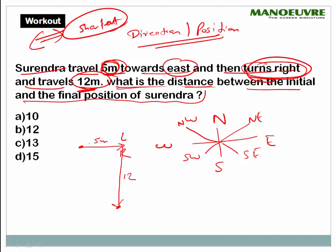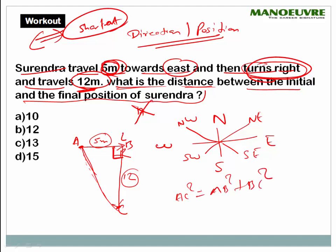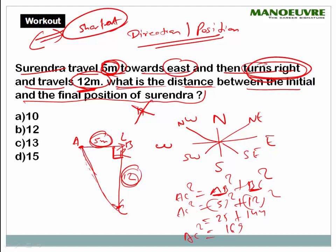Always go for the shortest distance — don't just add 5 and 12 to give the answer 17, which is wrong. The shortest distance is the hypotenuse. If you observe the diagram, it forms a right-angle triangle, so this is a case of the Pythagoras theorem: AC² = AB² + BC². AC is what we need to find. AB is 5, so 5² = 25; BC is 12, so 12² = 144. That gives AC² = 169, so AC = 13. The shortest distance answer is 13, which corresponds to option C (Calcutta).